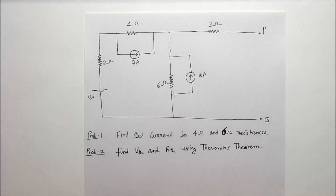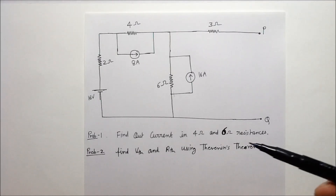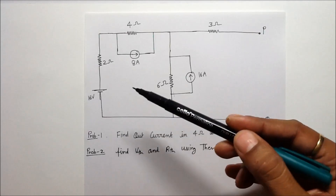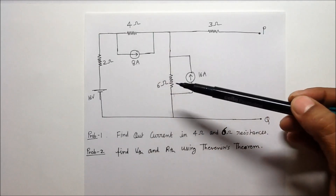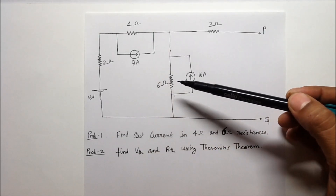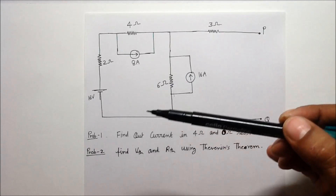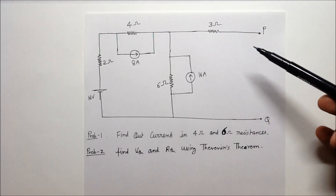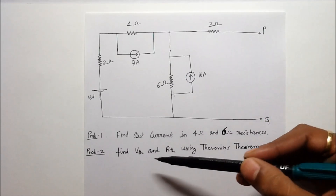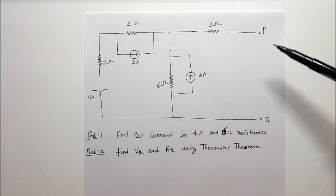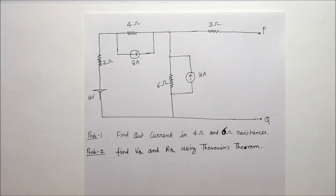We are going to solve this problem. Problem number one is to find out the current in the 4 ohm and 6 ohm resistances. The second problem is to find out the Thevenin's equivalent voltage and Thevenin's equivalent resistance across the points P and Q. We are going to solve the first problem.